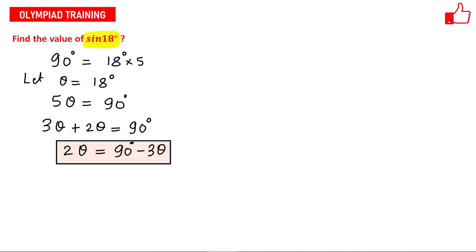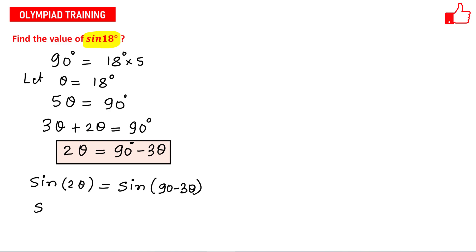Now, what we will do in the next step: I will simply take sin of both sides. So I can write sin(2θ) = sin(90° − 3θ). And sin(90° − θ) = cos θ, so this becomes sin(2θ) = cos(3θ).